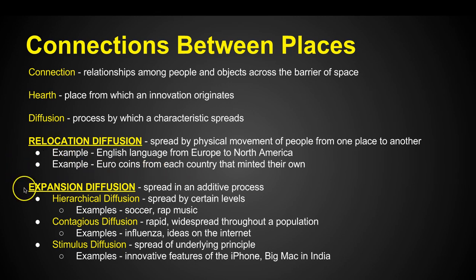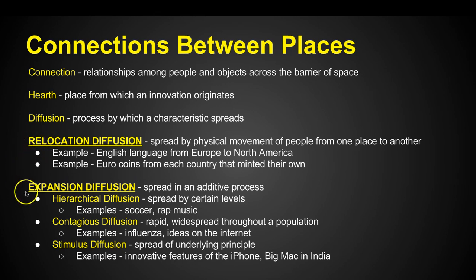The other kind of diffusion is called expansion diffusion, which is the spread in an additive process — meaning as it moves, more people access that expansion. It expands exponentially and gets a lot bigger, whereas relocation diffusion doesn't necessarily get bigger — it's just people moving. There are three forms of expansion diffusion.